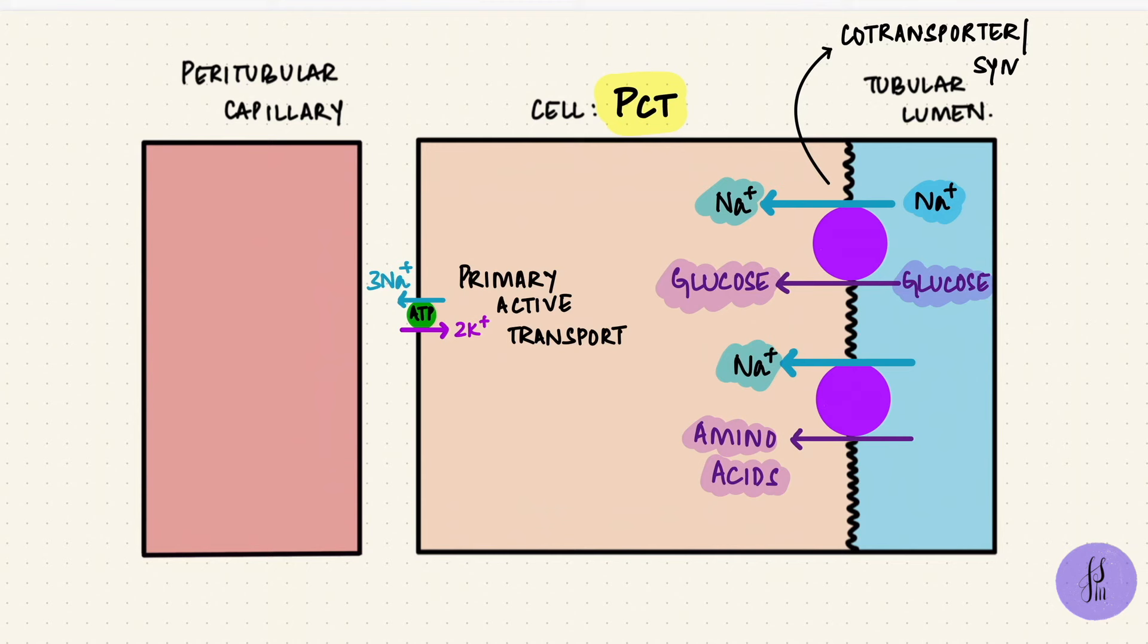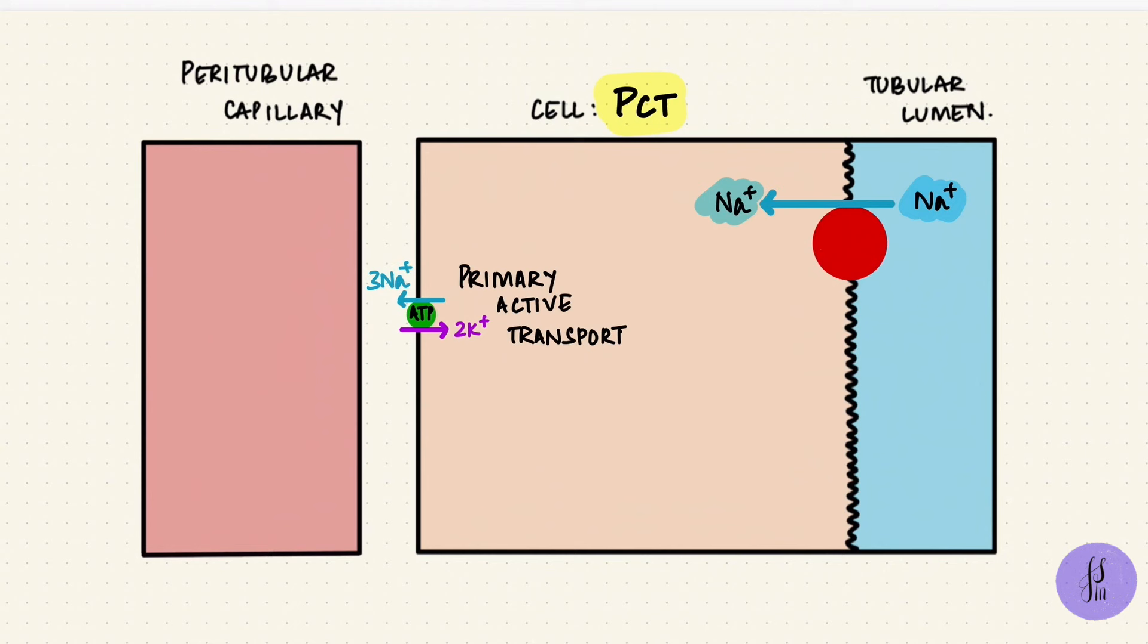The PCT also has a sodium-hydrogen exchanger. That works similarly, just that sodium enters the cell in exchange for hydrogen ions. So it's called an exchanger or an antiporter or a counter-transporter, because hydrogen ions moved in the opposite direction to the sodium ions.